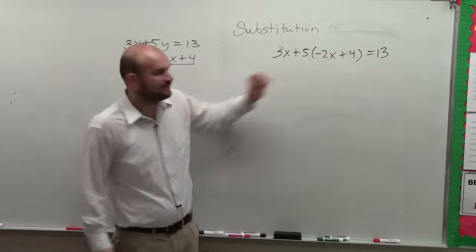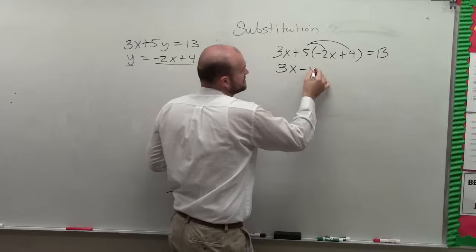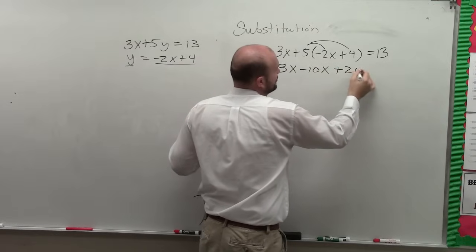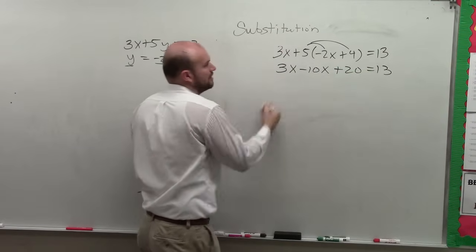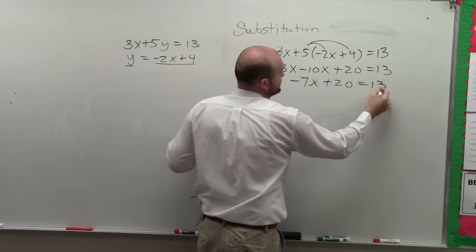This is a multi-step equation. I can solve this. So I apply distributed property. So I have 3x minus 10x plus 20 equals 13. 3x minus 10x is negative 7x plus 20 equals 13.